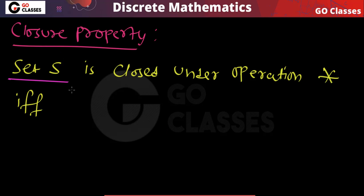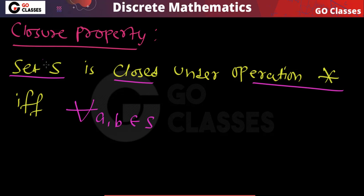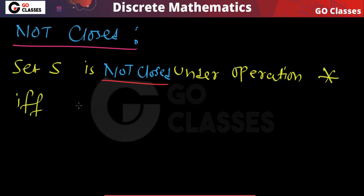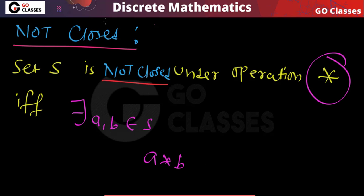Closure property means you have a non-empty base set S. This set S is closed under operation star if and only if for any two elements (same or different) you take from S, the result of applying the operation also belongs to S. Not closed means there exist elements a, b such that applying the operation gives a result not in the set.